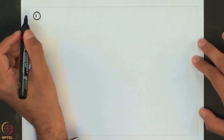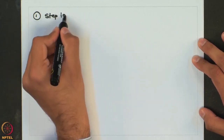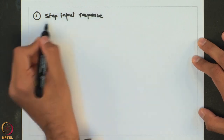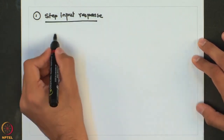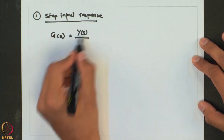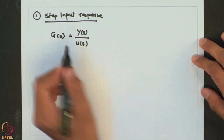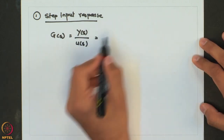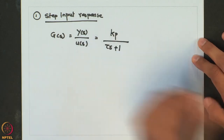The first type of disturbance we will analyze is a step disturbance or step input. We have a transfer function for our system, which is the ratio of the Laplace transform of the output to the Laplace transform of input, which for a first order lag is Kp over (tau·s + 1).